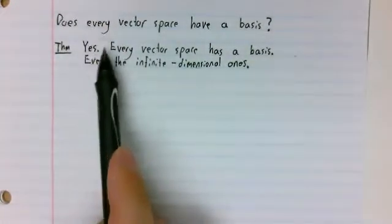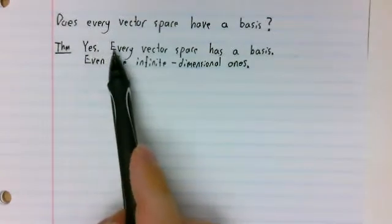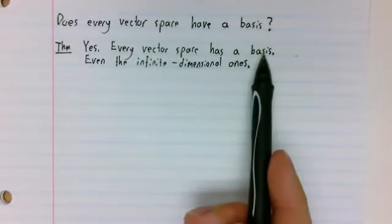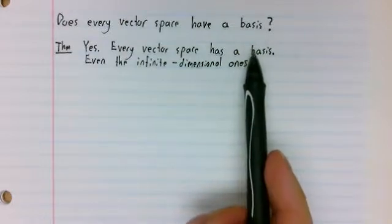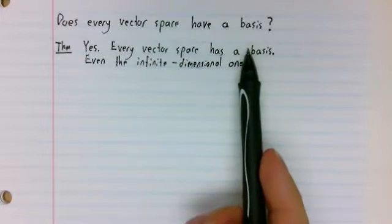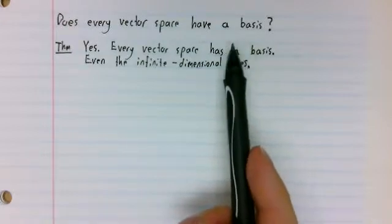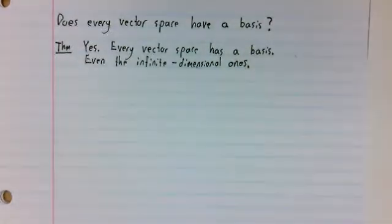That every finite vector space has a basis is clear. We have a theorem that says any linearly independent set of vectors can be expanded into a basis. So take a single non-zero vector, that's a linearly independent set, expand it into a basis.